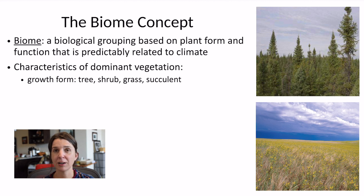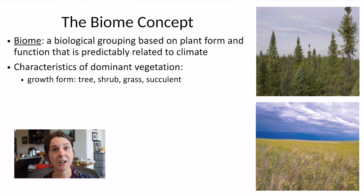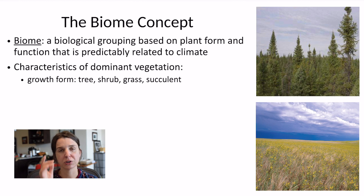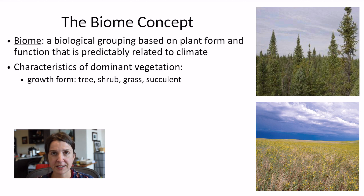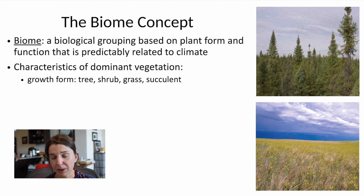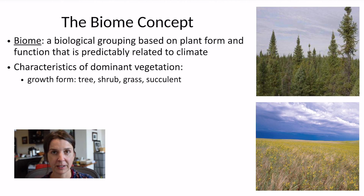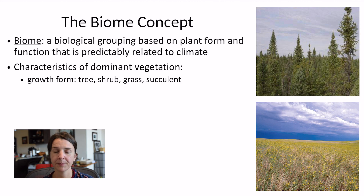One major characteristic is their growth form. Some different growth forms of plants include things like whether it's a tree, which is a woody plant with one major stem axis that just grows upward and is usually quite tall. Or it might be a shrub, which is also a woody plant but is usually multi-stemmed and much shorter than a tree. Plants may also be herbaceous, which is non-woody, so they might be something like a grass. Some plants are succulent, meaning their tissues store a lot of water, like a cactus.